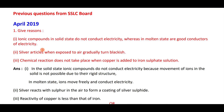First question: give reasons why ionic compounds in solid state do not conduct electricity but in molten state are good conductors. In solid state, movement of ions is not possible due to the rigid structure. In molten state, ions are free to move and conduct electricity — ions are responsible for the conduction of electricity.